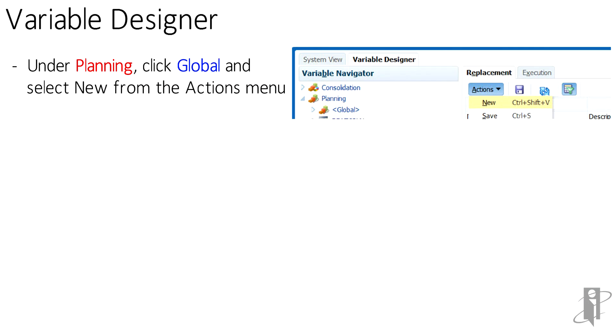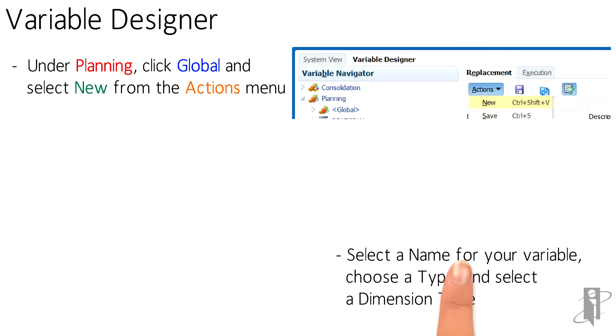Choosing Global lets you use the variable for any planning application rather than just one. In the Replacement tab on the right, click New from the Actions menu.